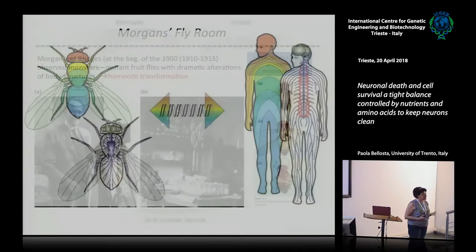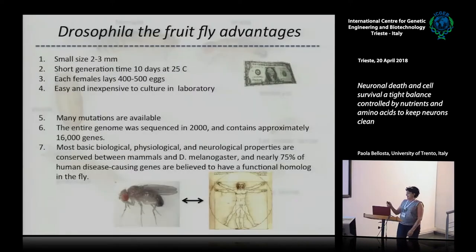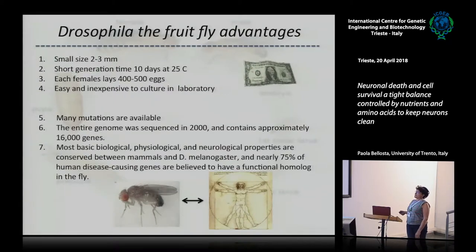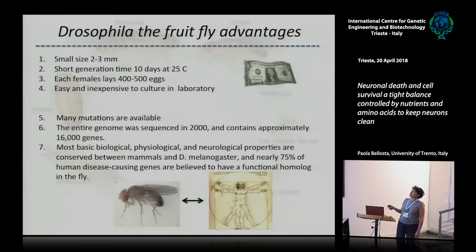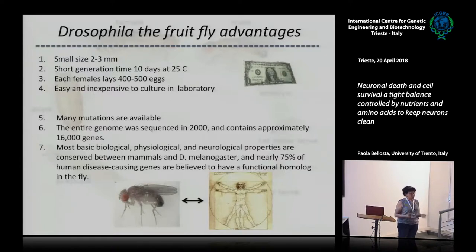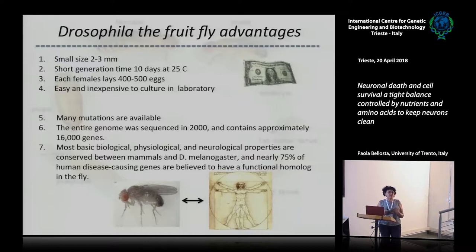It's a bit arrogant to say, but we know now that Drosophila has at least 75% of genes that cause human diseases. So we can apply genetics — with the advantages, the tools, and the short generation times — to study mechanisms that are not too long to analyze, unlike in humans.